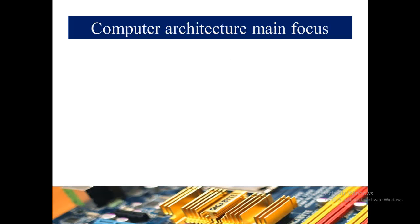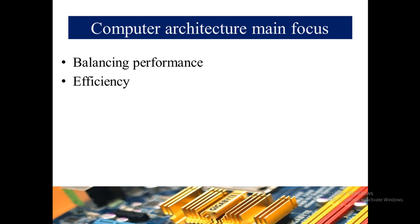The main focuses of computer architecture are: balancing performance — it tries its best to improve the performance of the computer system — improving efficiency, and reducing cost. Usually, only the architecture that has less cost and is more efficient is adopted. Additionally, the architecture that is more reliable will take prime precedence over all others.